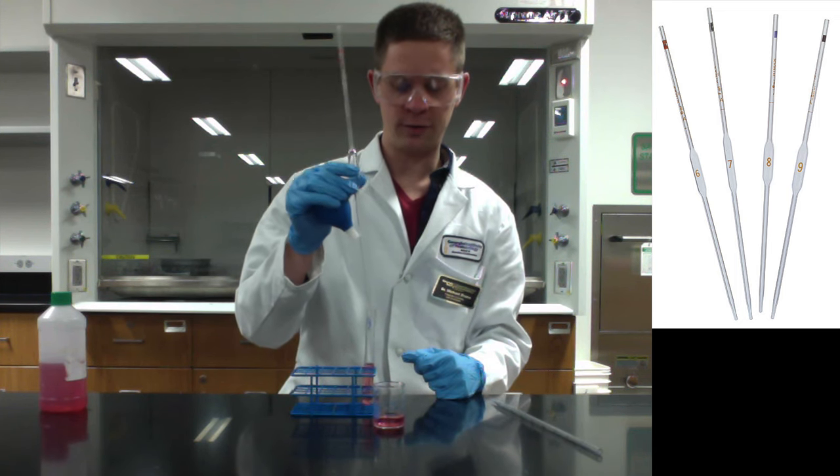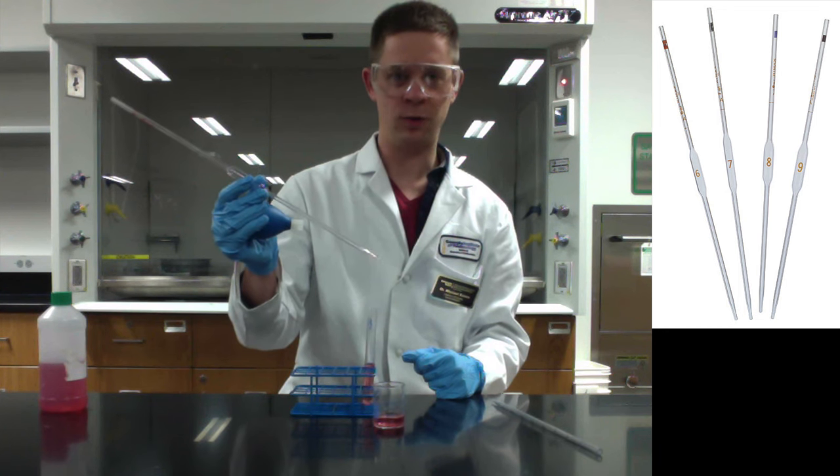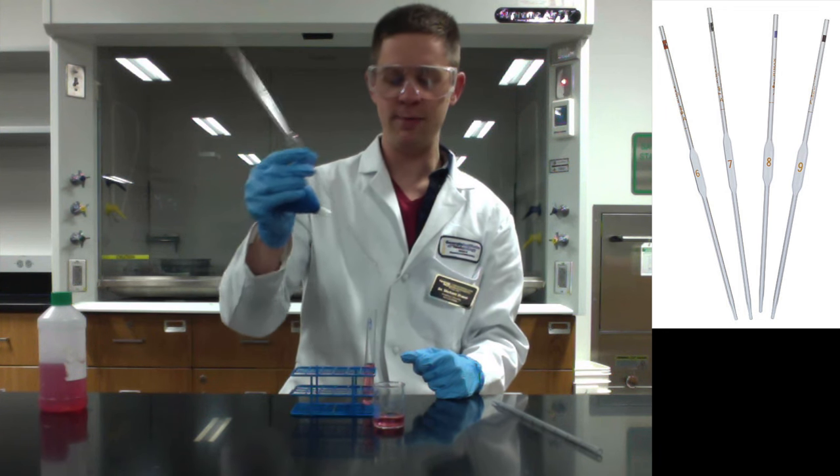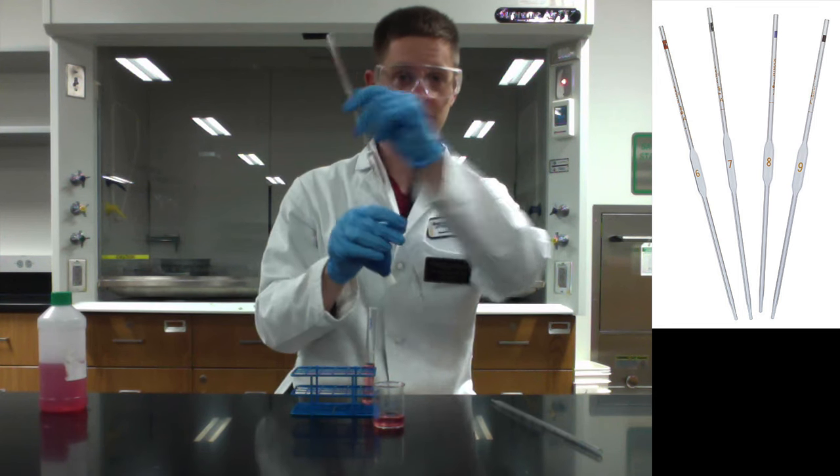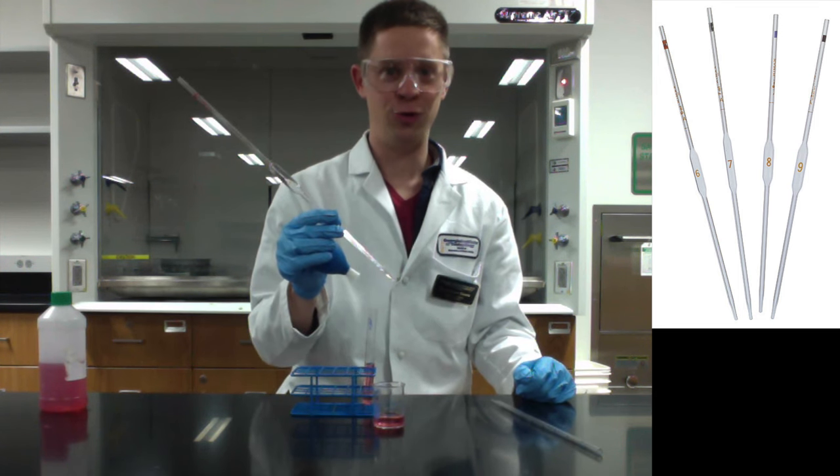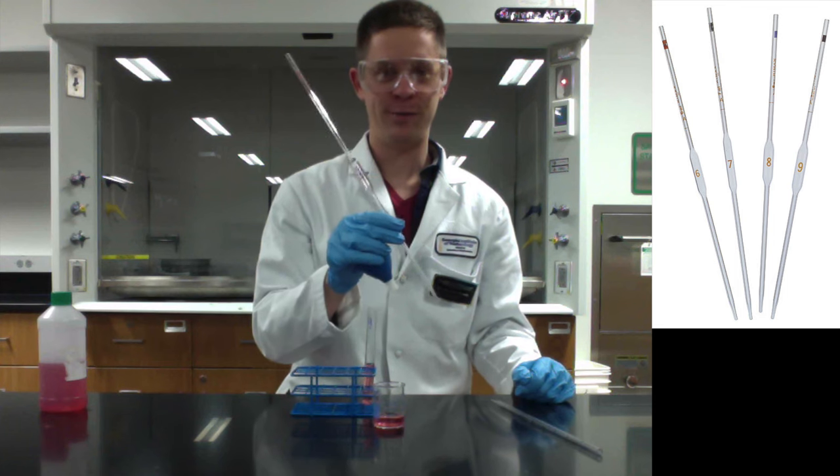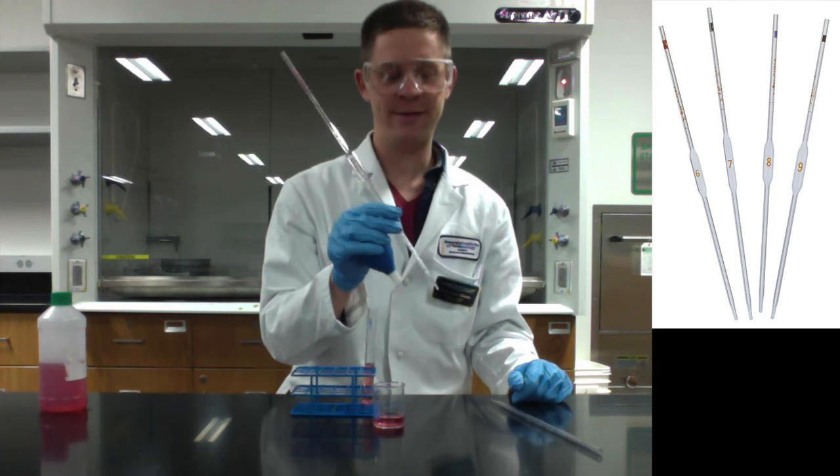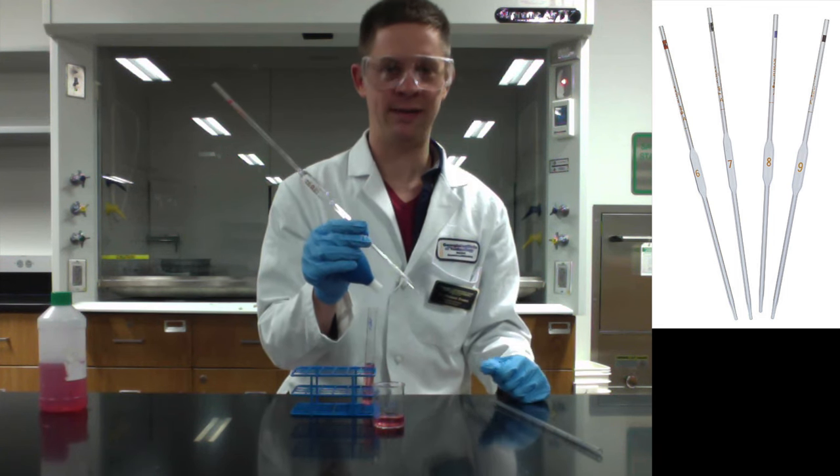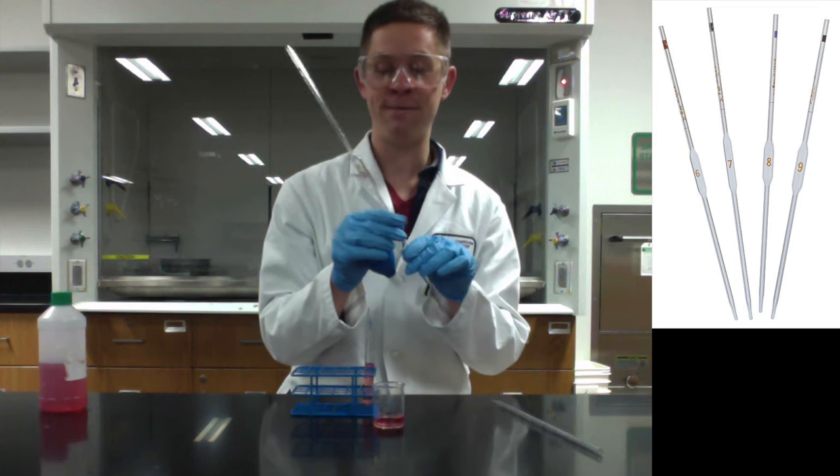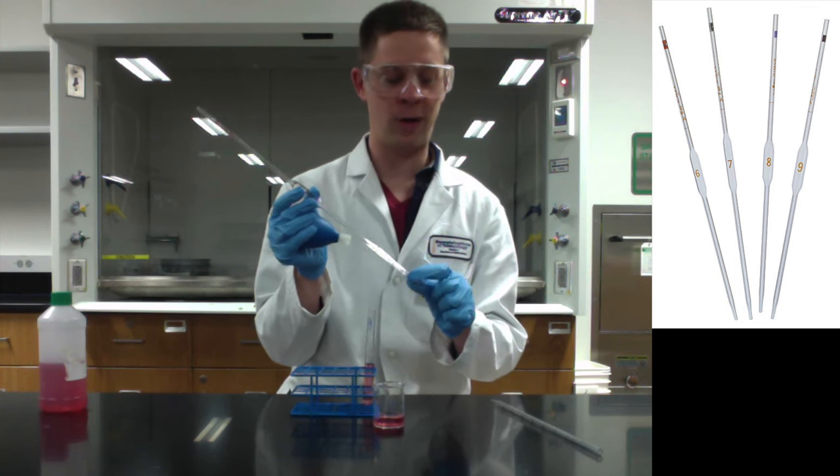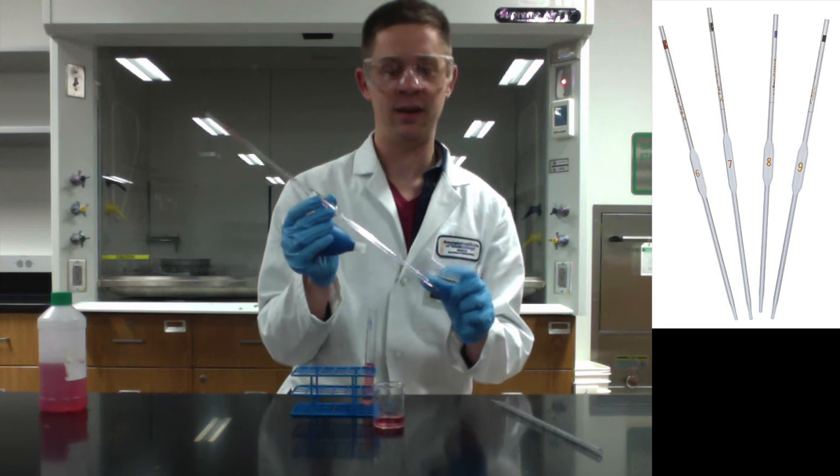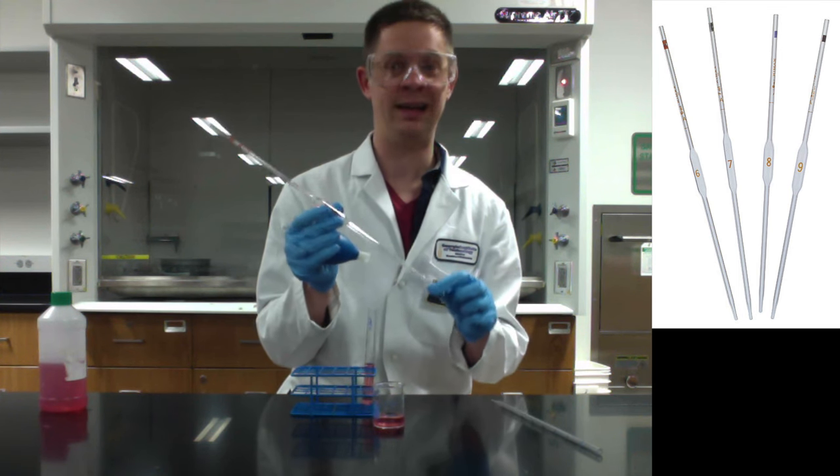So the question arises what to do with this amount of liquid left in the pipette. And you may be tempted to use the bulb to blow out the rest of that liquid. Don't do that. Again, these volumetric pipettes are precision crafted so that that little bit of liquid left in the bottom of the pipette is not factored in to this 10 milliliter figure. In other words, do not blow out the bottom of this.